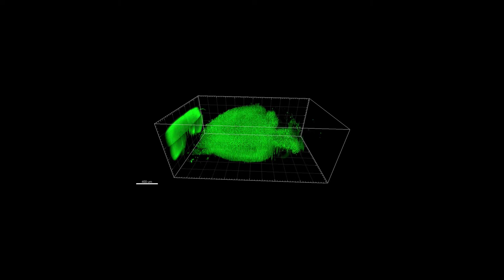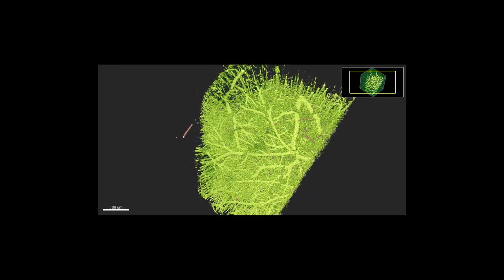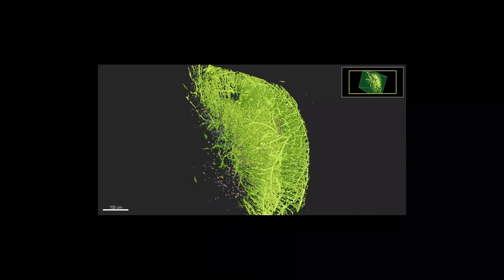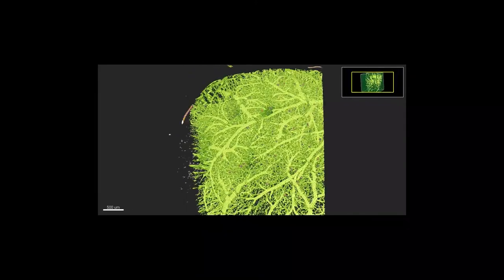For example, here we are looking at a transgenic mouse that expresses GFP in endothelial cells, so now we can visualize every single capillary, and the vein, and artery, the entire vascular tree of the mouse brain.